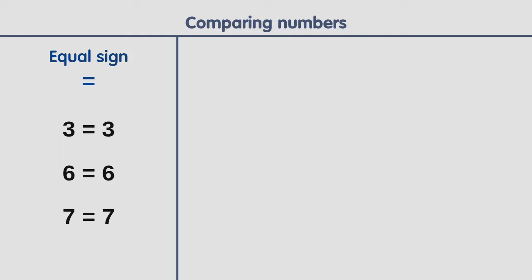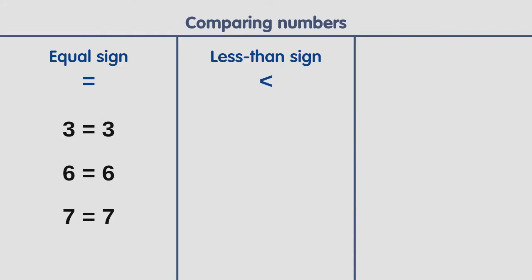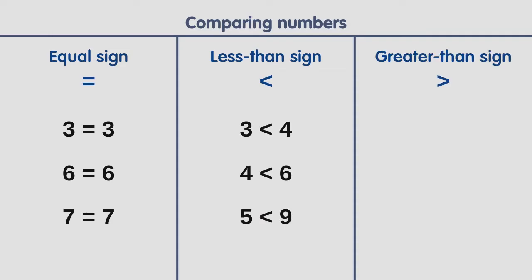When a number is less than another number, we use the less than sign. For example, three is less than four, or four is less than six, or five is less than nine. When a number is greater than another number, we use the greater than sign. For example, four is greater than three, or six is greater than four, or nine is greater than five.